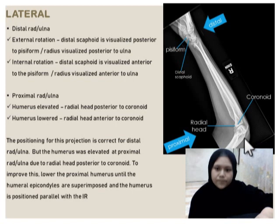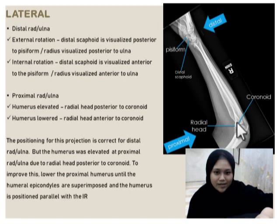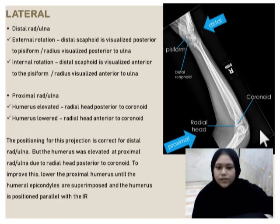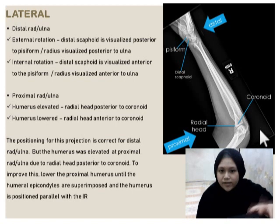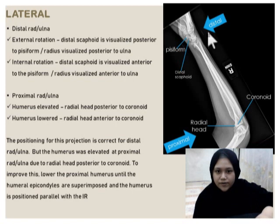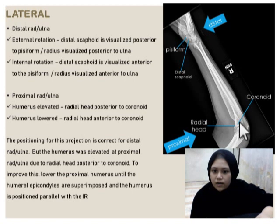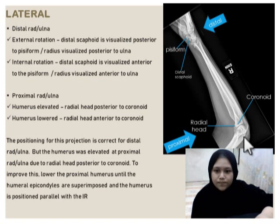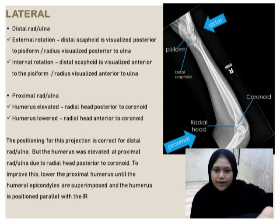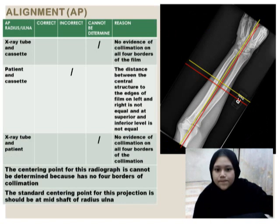If the humerus is elevated, radial head is posterior to coronoid. If the humerus is lower, radial head is anterior to coronoid. The positioning for this projection is correct distally, but the humerus was elevated at the proximal. To improve this, lower the proximal humerus until the humerus epicondyles are superimposed and the humerus is positioned parallel with IR.